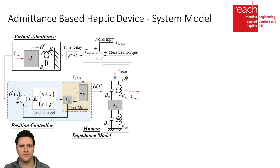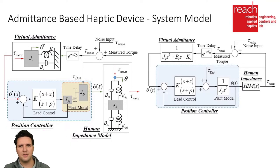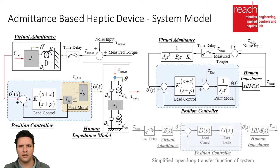A single degree of freedom admittance control loop can be represented in block diagram form, and in the case of high-performance admittance-type haptic devices, the control loop can be simplified by neglecting the human's disturbance on the high-bandwidth position control loop.